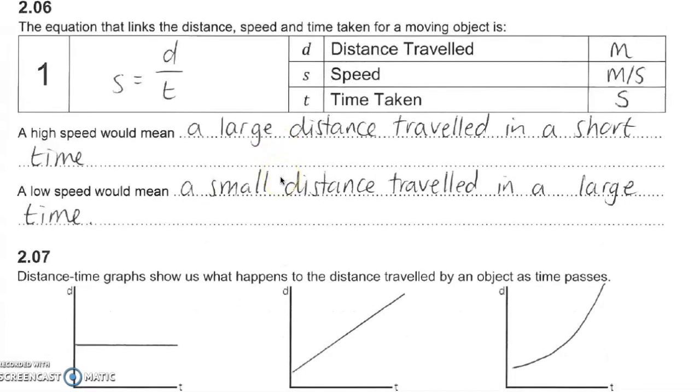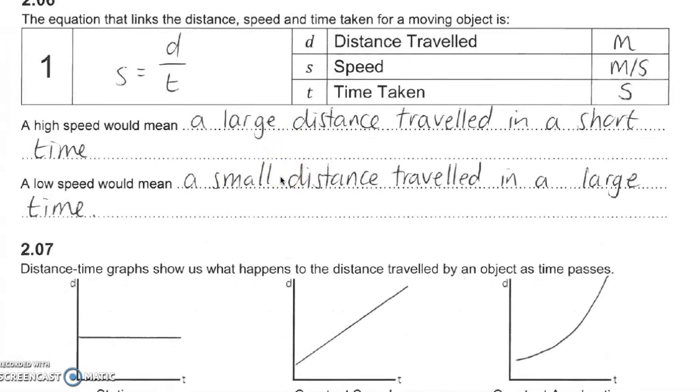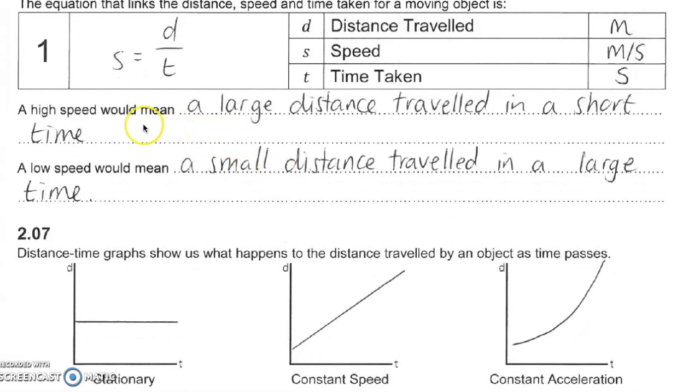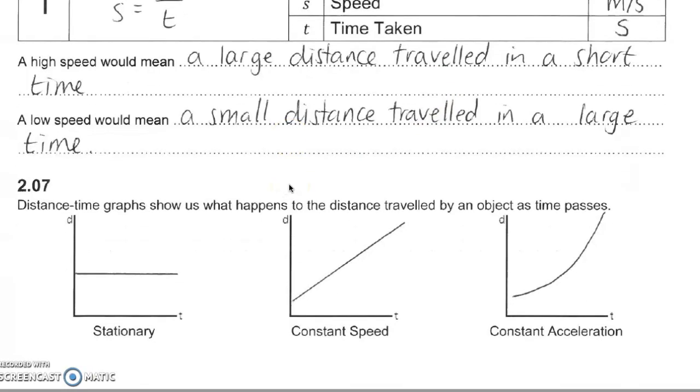Pretty simple, pretty straightforward. You should know from primary school, just everyday experience, a high speed means that you're covering a large distance in a short time, low speed, completely the opposite.